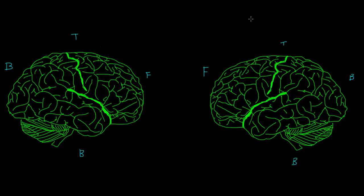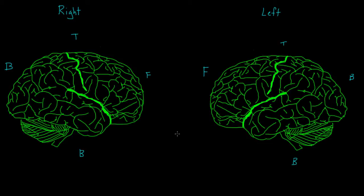Let's say that this person was looking at you when we peeled their brain in two. In that case, this would be their left side of their brain, and this would be their right side. The first thing you might notice looking at this brain is that the sides are basically identical, and that is absolutely correct. For the most part, the two sides look physically identical to one another, but even though they look identical, for a great majority of people, the two sides of the brain actually do different things.